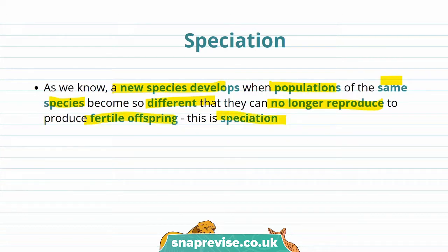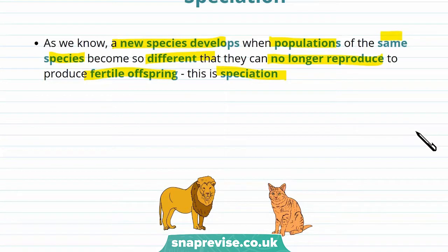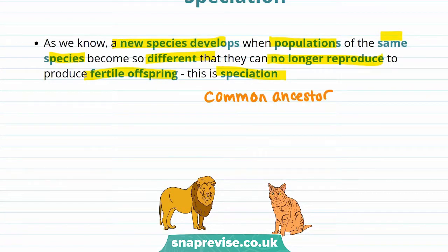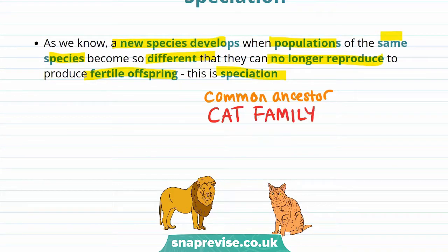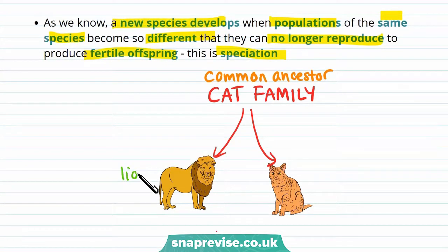So now let's take an example of speciation. You start with a common ancestor — in this case, the common ancestor is from the cat family. Over time, due to natural selection acting differently on the different populations, the two populations separate into species. In this case, a lion and a cat.